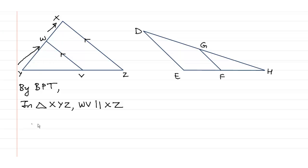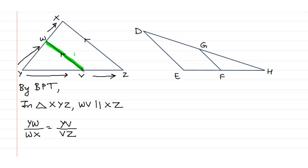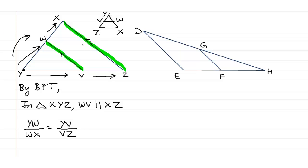So BPT gives us YW upon WX is equal to YV upon VZ. Just for explanation — in triangle XYZ, WV is parallel to XZ. The point that is not on the parallel line is point Y. So BPT starts from vertex Y. If you rotate the triangle, Y goes up and we get YV upon VZ is equal to YW upon WX, which is exactly the same.